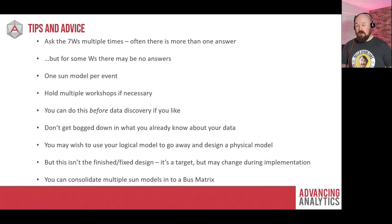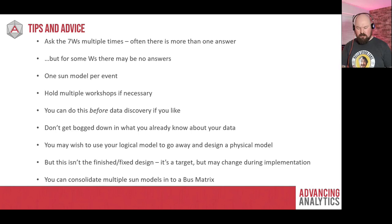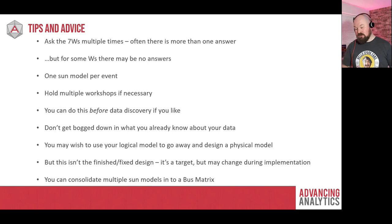Some extra advice on SUM modeling: ask the Seven W's multiple times, because there's often more than one answer. For example, after identifying 'customer' for 'who,' ask 'who else?' In retail sales, another 'who' might be the salesperson — you'd add another spoke for salesperson. 'Where' might also have multiple answers — where was it bought, and where is it being delivered? For some W's there might be no answer: 'why' and 'how' can be abstract, and that's fine — the Seven W's are there to prompt conversation, and if nobody has an answer, just move on.